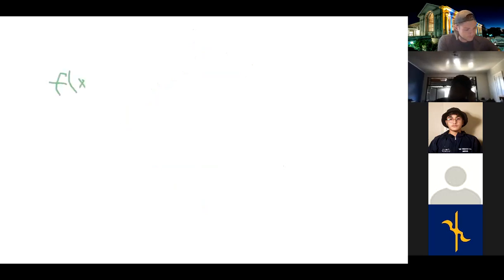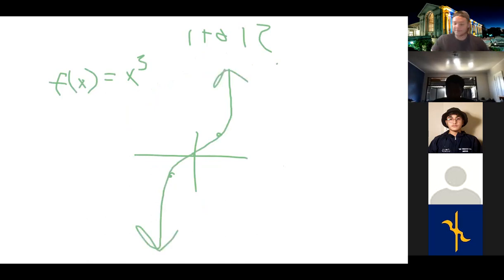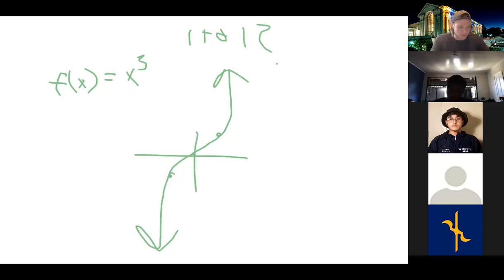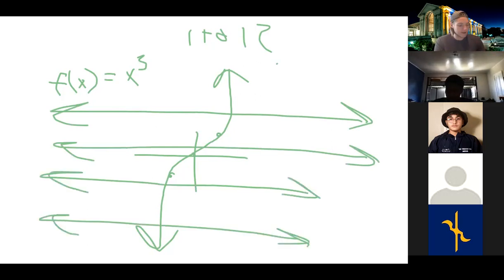Quick example: is f(x) equals x cubed one-to-one? Graphing it — zero comma zero, one comma one, negative one comma negative one — it does something like an S-curve. Drawing horizontal lines at any height, each one only ever intersects the graph once. So yes, f(x) equals x cubed is one-to-one.